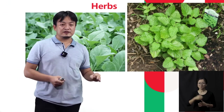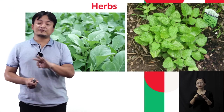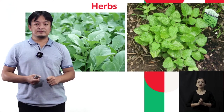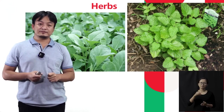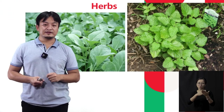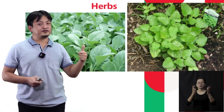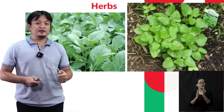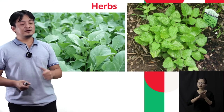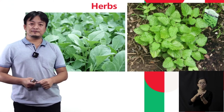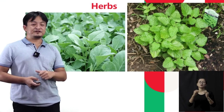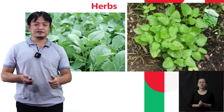So students, from here we have learned three different types of plants. Plants are different in size. We differentiate them into three parts: trees, which are very big plants; shrubs, which are medium-sized plants; and herbs, which are small-sized plants.